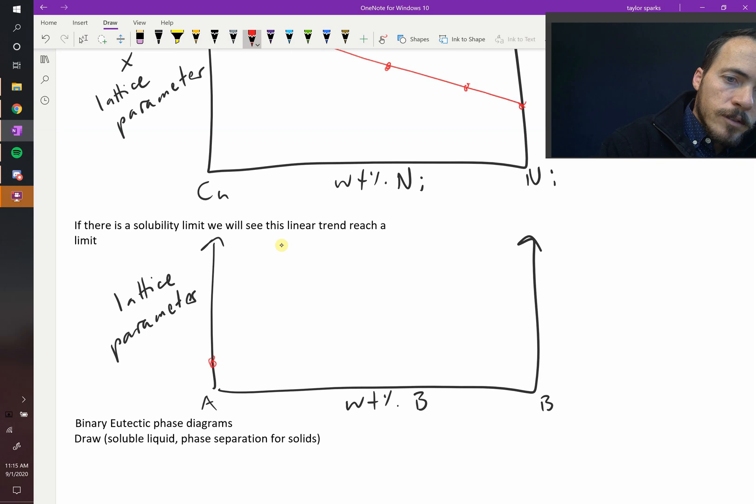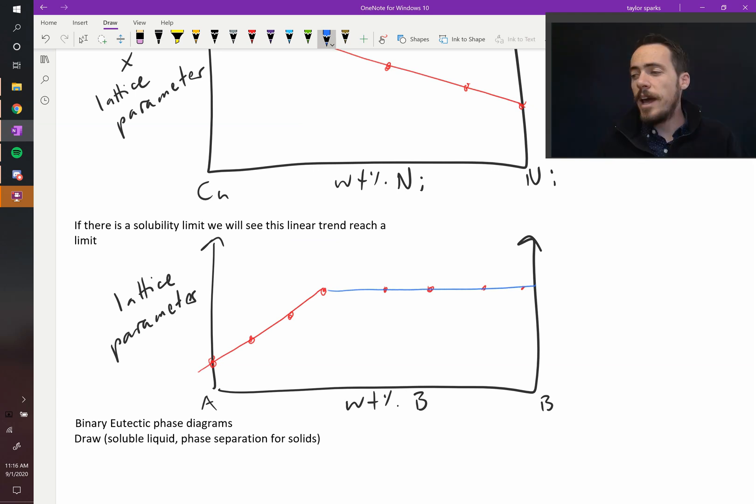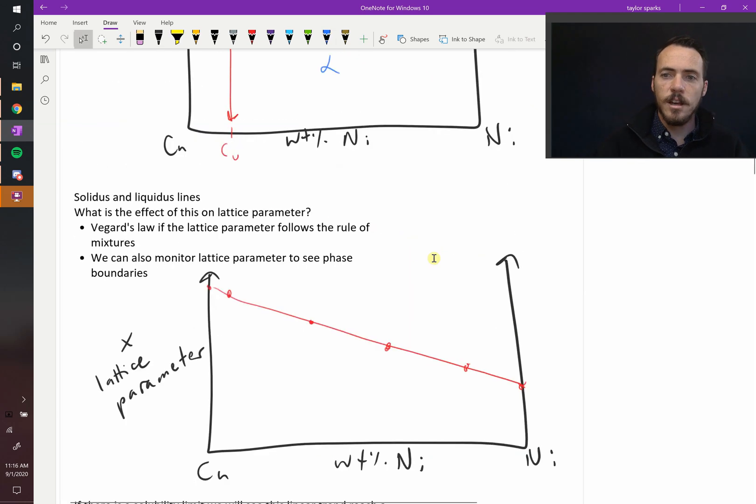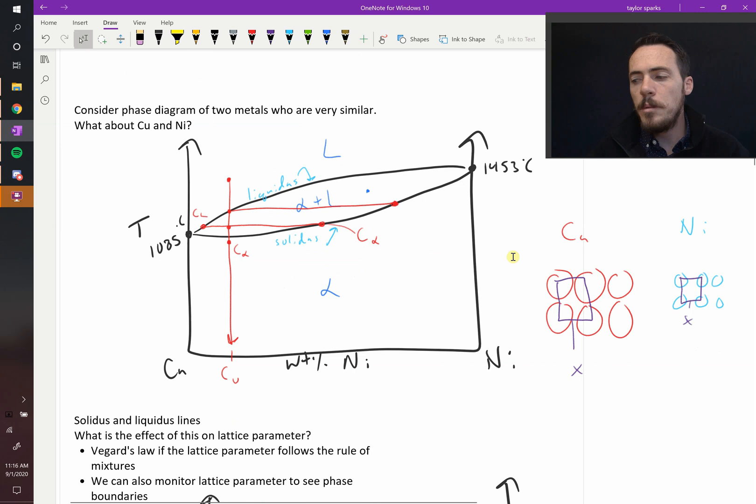You'd have data points where they are linearly increasing until a point, and then they don't change anymore. So this is the region of solid solubility, and then this is the region where you must have a two-phase mixture because the lattice parameter, the size of this cell, isn't changing.